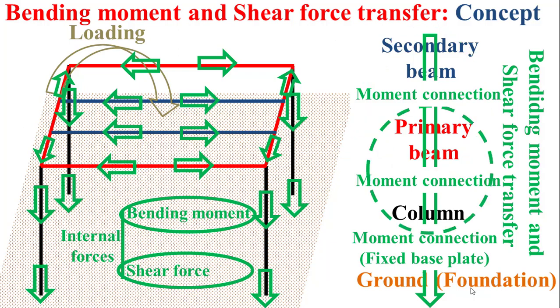If we examine the bending moment and shear force transfer between the primary beam and the column, in this case the primary beam becomes the child member, while the columns are the parent member. Now let's focus on the concept of bending moment transfer.